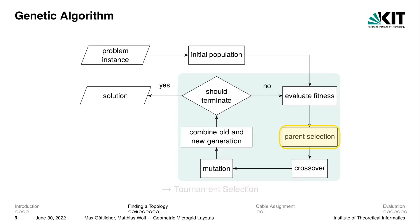The next step in the genetic algorithm is to evaluate the fitness of all individuals. As mentioned, we compute a cable assignment for this, but I will go into detail on that step later. The next step after this is selecting parents for crossover. Parent selection is a generic procedure which does not depend on the problem structure, so what we use here is tournament selection, where we draw a small group of topologies and choose the best one as a parent, repeating this as often as parents are needed.